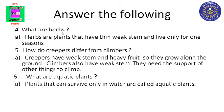Fourth, what are herbs? Herbs are plants that have thin, weak stem and live only for one season. Fifth, how do creepers differ from climbers? Creepers have weak stem and heavy fruit, so they grow along the ground. Climbers also have weak stem but need the support of other things to climb.